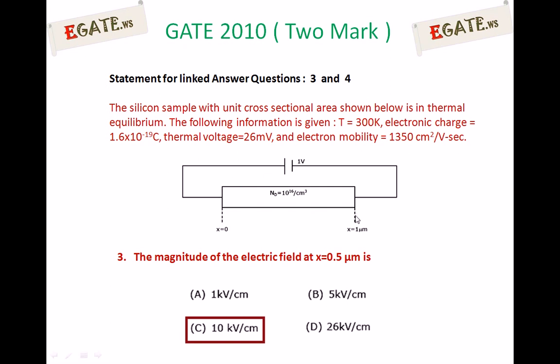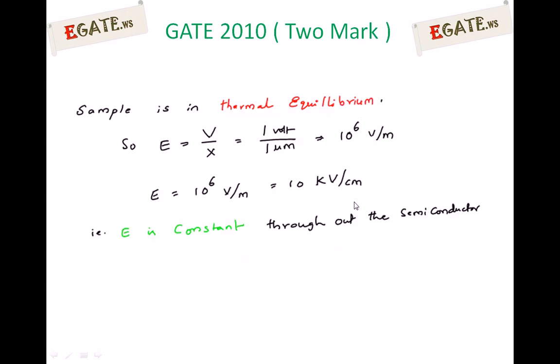The electric field at x = 1 micrometer: the voltage across this point is 1 volt and distance is 1 micrometer. Electric field units are volt per meter, so electric field can be calculated by voltage divided by distance.